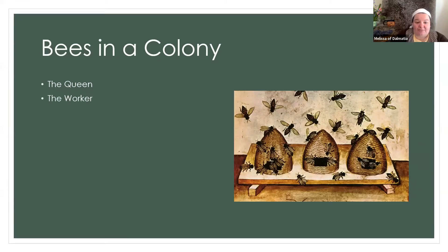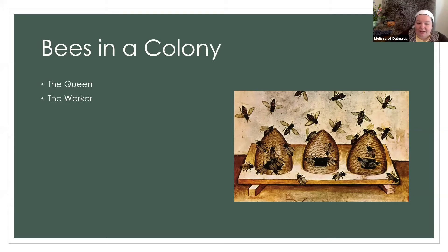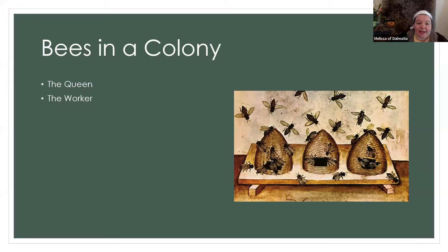The worker bee is always female, with a life cycle typically five to six weeks long during summertime. She goes through egg, larva, pupa, then adult bee, starting as a nurse bee, then becoming a guard bee, and then going out to collect pollen and nectar. Worker bees are capable of laying eggs, but because they are all unfertilized, those eggs become drones.